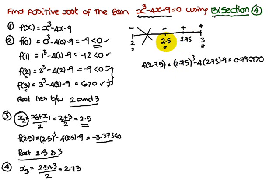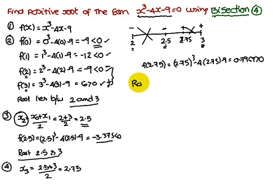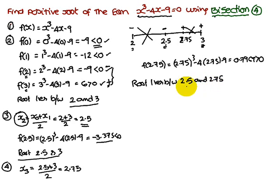Now we check whether the root lies between 2.5 and 2.75, or between 2.75 and 3. Since the root always lies between two opposite signs — 2.5 is negative and 2.75 is positive — the root lies between 2.5 and 2.75.